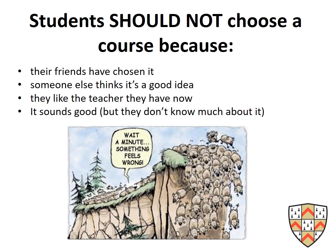However, students should not choose a course because their friends have chosen it — more often than not they wouldn't be in classes with their friends. In the case of Geography, there were 5 Geography classes last year, so they could go into any one of those. They also shouldn't choose because someone else thinks it's a good idea, as it's important the student feels it's in their best interest. Similarly, they cannot be guaranteed the same teacher, so it's really important that it's the subject they like, not just the teacher.